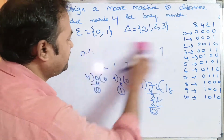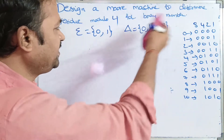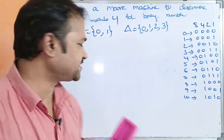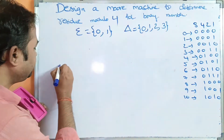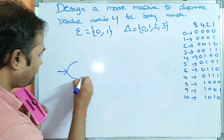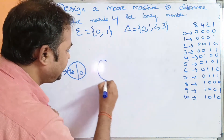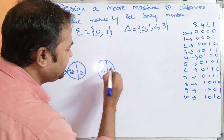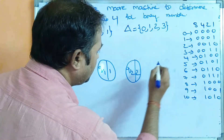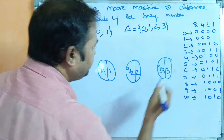Now let us solve the problem and design the Moore machine. The output alphabet contains 4 symbols, so we require 4 states. The first state is Q0 with output 0. Next state Q1 with output 1. Next state Q2 with output 2. Next state Q3 with output 3.